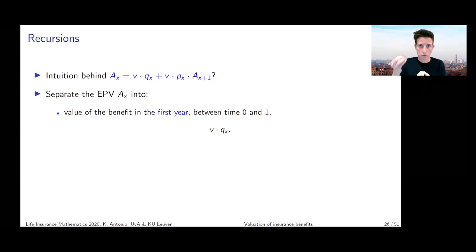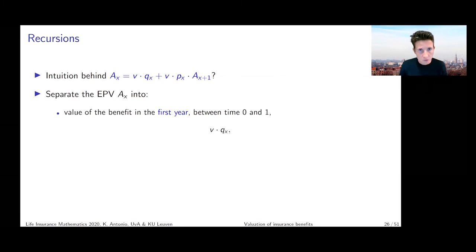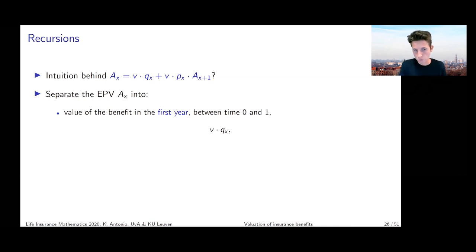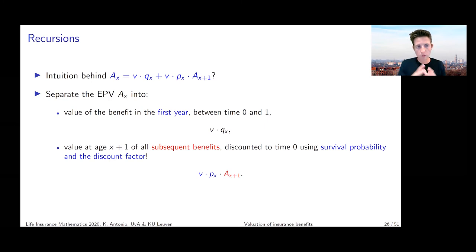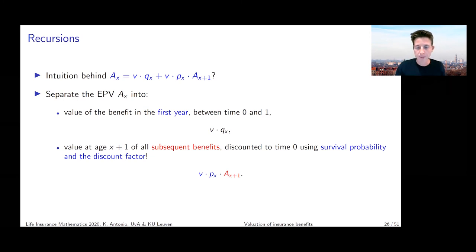If we sell a one-year insurance product to an x-year-old, guaranteeing a one-euro benefit if the policyholder dies between time zero and time one — paid at the end of the year, i.e., at time one — the expected present value is v (discounting from time one to time zero) multiplied by q_x, the probability of dying in the first year. That's the EPV of a one-year term insurance with a one-euro benefit sold to an x-year-old.